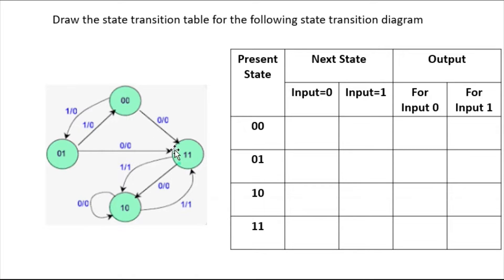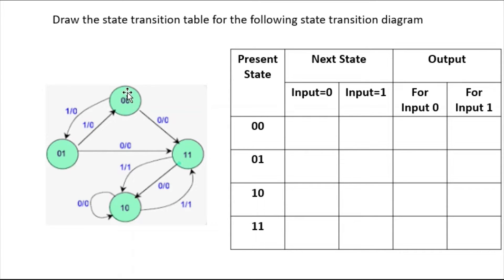So again, present state: 0 0, 1 1, 1 0, 1 1 — I have followed the sequence. It doesn't matter if the states are given in a different order in the figure; normally clockwise states are given but here I think anti-clockwise states are given. So no problem. The values written inside the circles are called present states: 0 0, 0 1, 1 0, 1 1.